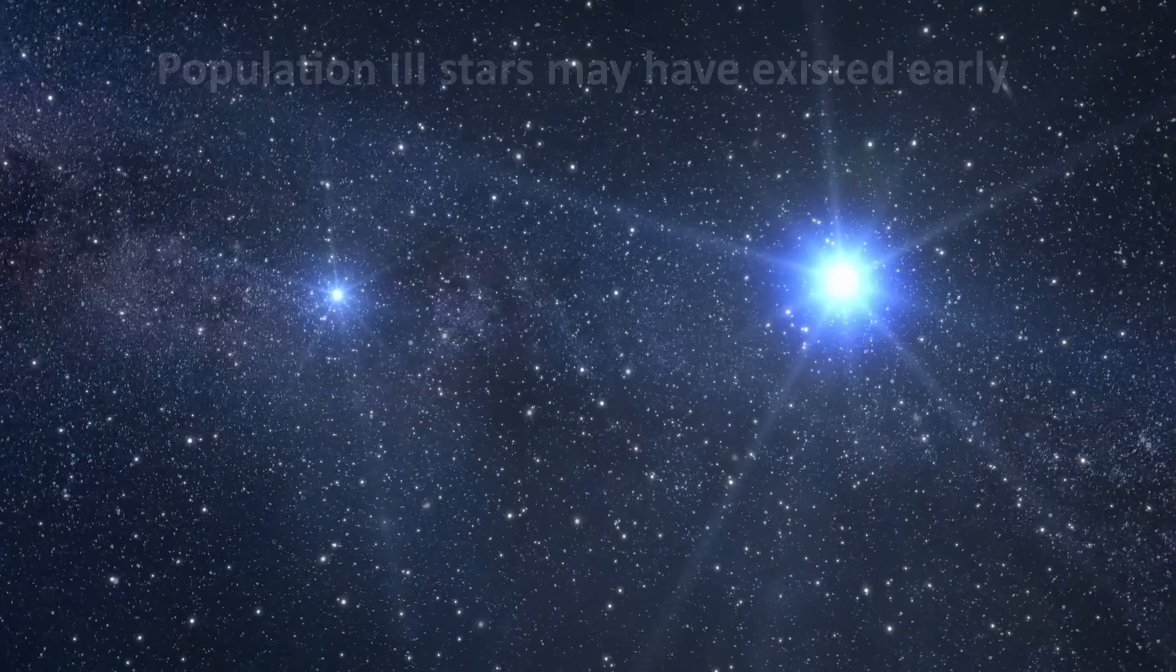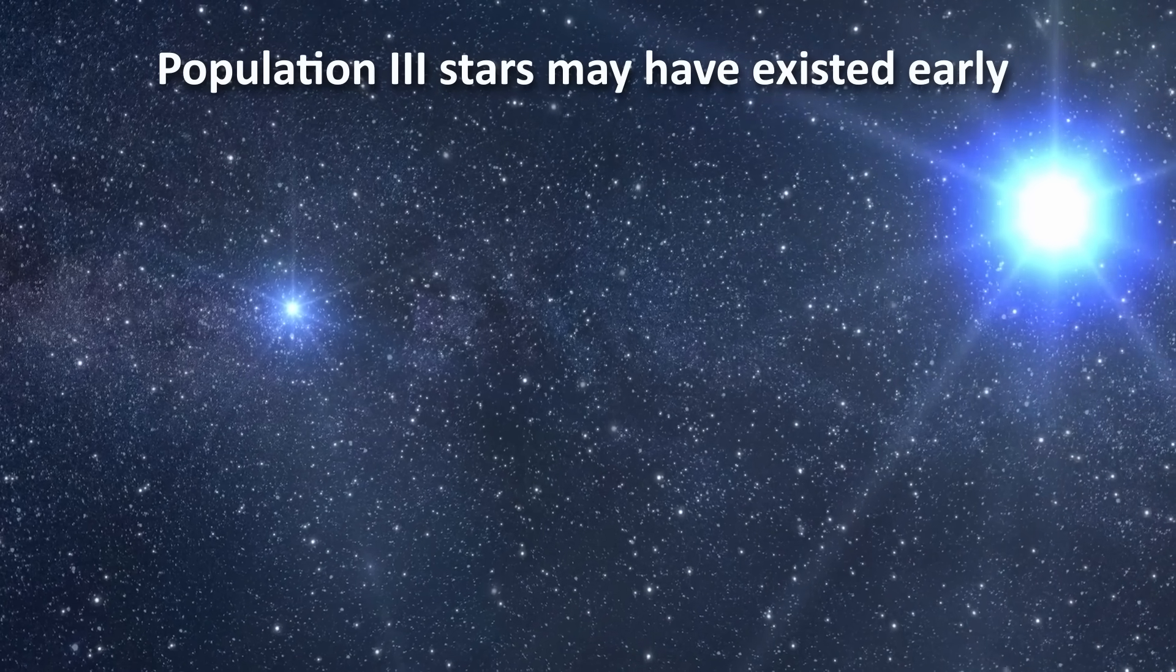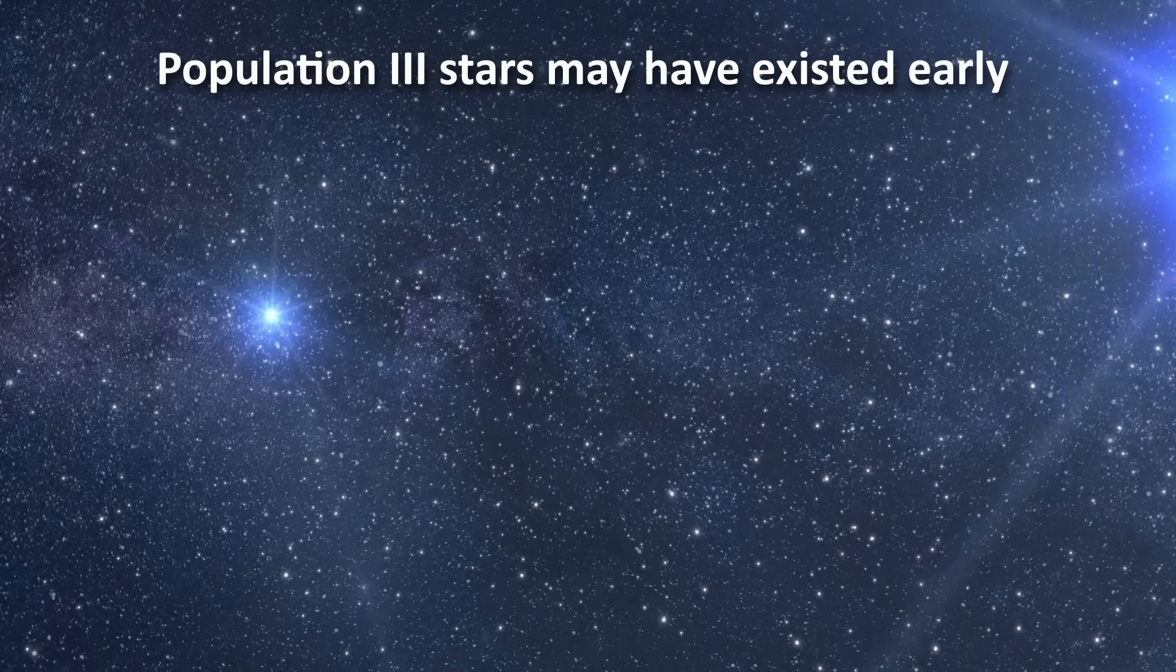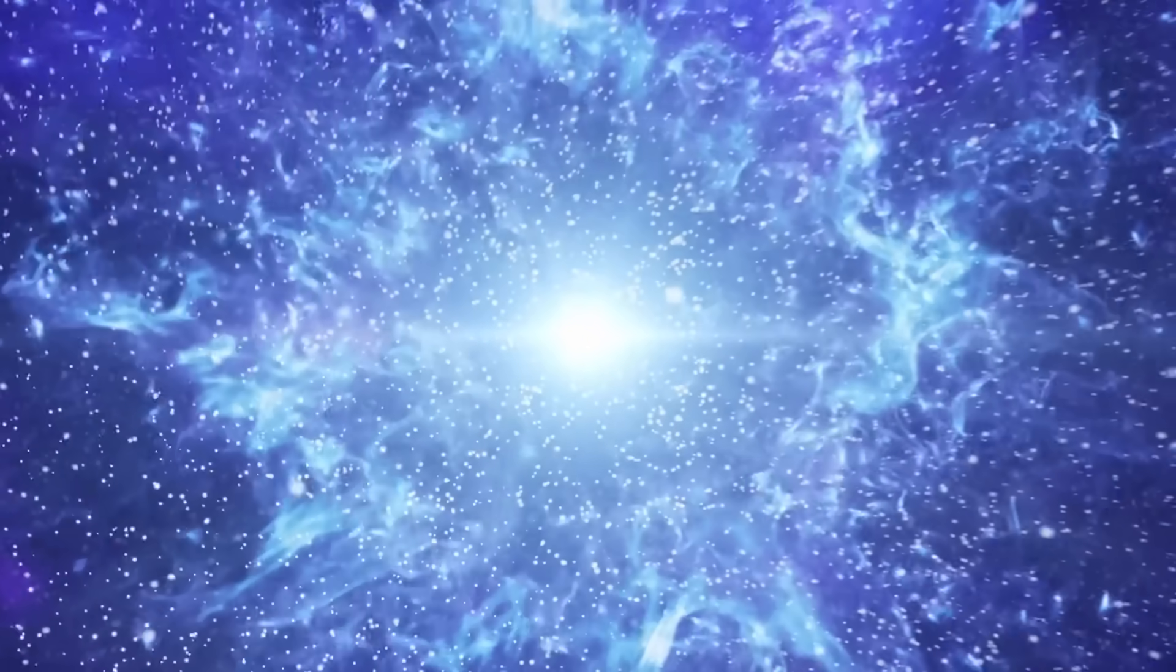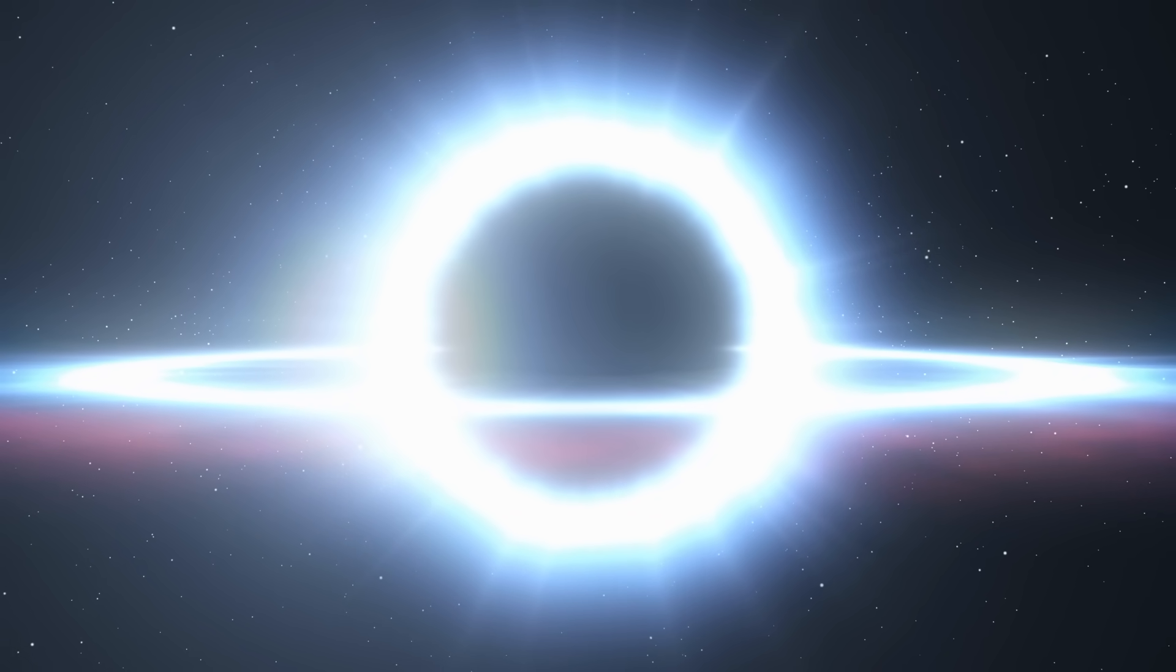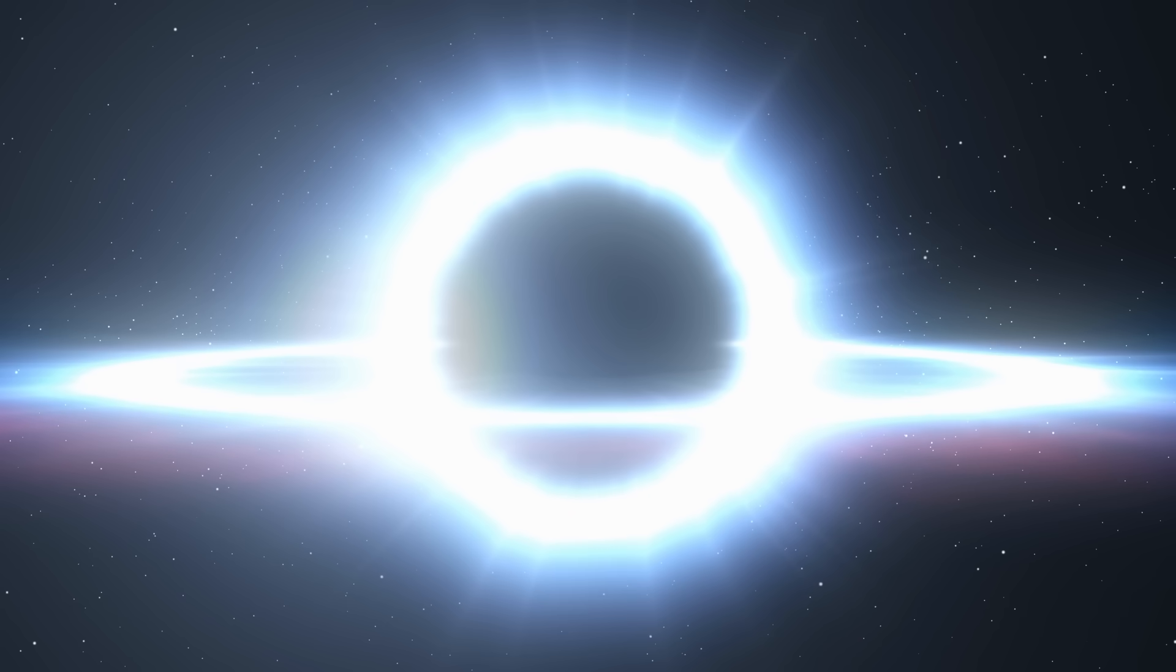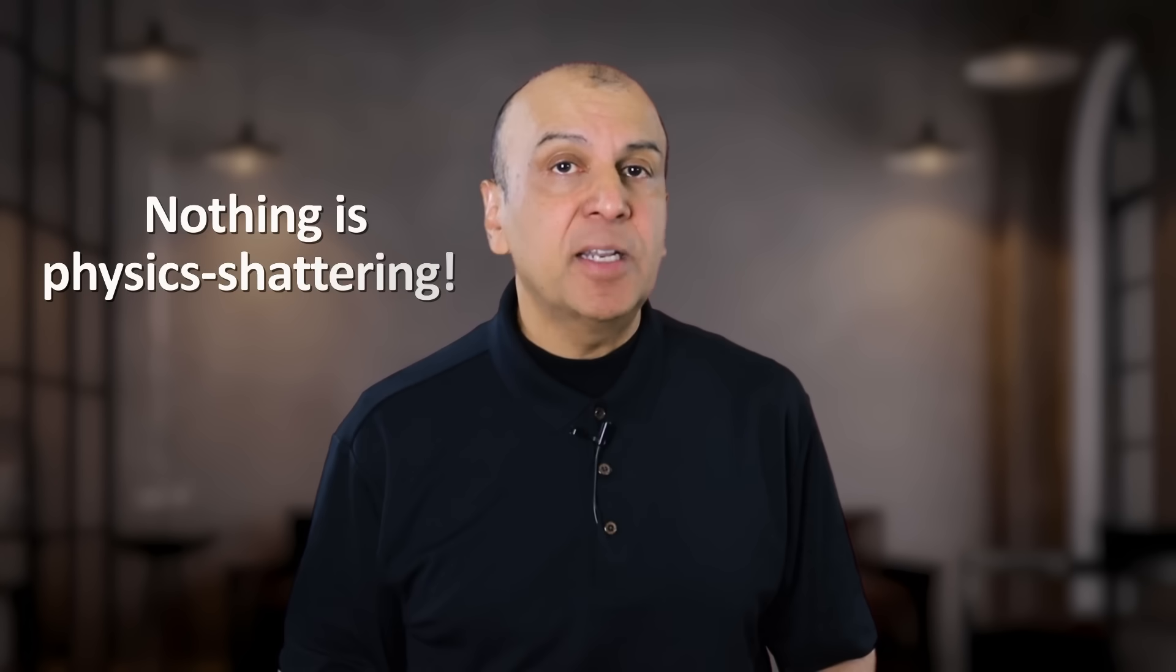Other theories suspect that so-called population 3 stars, which are supermassive stars virtually without any metal content, could have existed in the very early universe. Since such stars would burn quickly and have very short life spans that end in a supernova explosion and formation of early black holes, this would effectively speed up the evolution of galaxies. This is exactly what you would need to create a more evolved universe early. There are other theories as well that could resolve this conundrum, but none of them are exactly physics shattering, just minor adjustments to the Lambda CDM model.